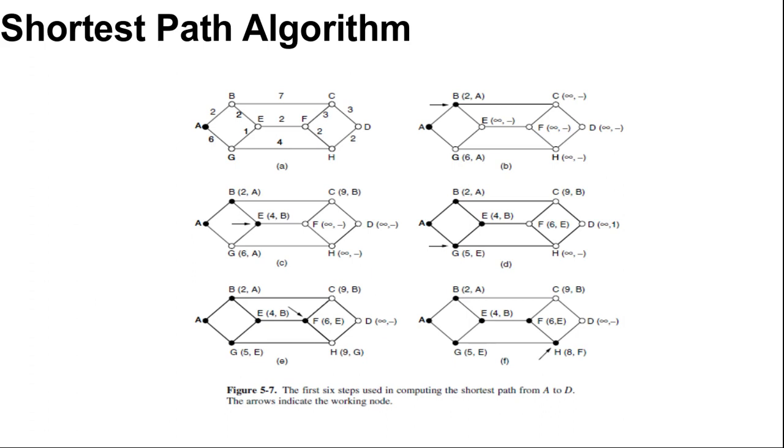One way of measuring path length is the number of hops. Using this metric, the paths ABC and ABE in the figure are equally long. You can see here ABE and ABC. Another metric is the geographic distance in kilometers, in which case ABC is clearly much longer than ABE.